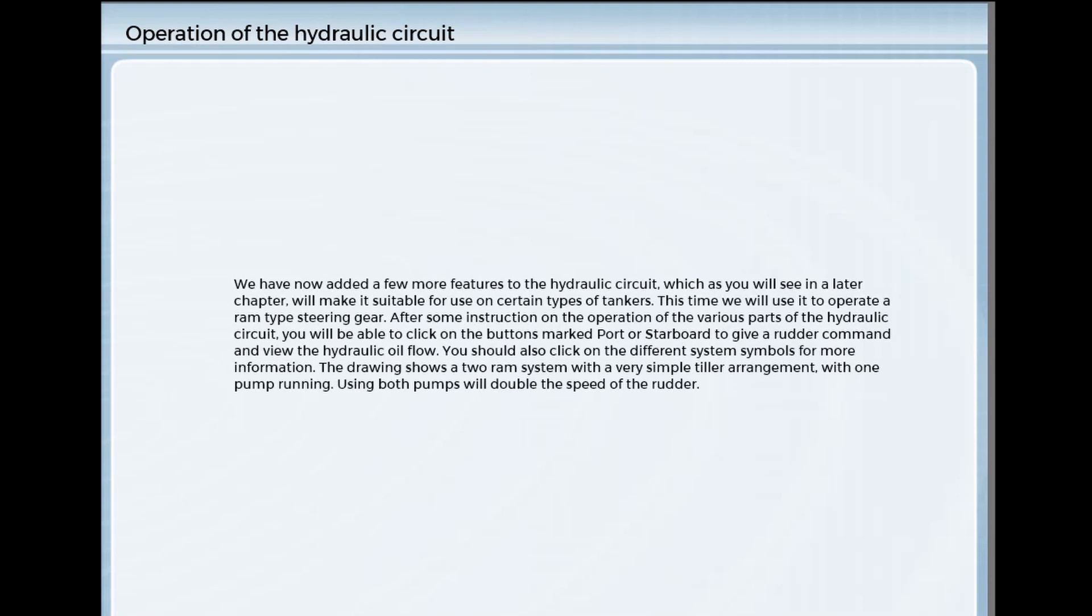We have now added a few more features to the hydraulic circuit, which, as you will see in a later chapter, will make it suitable for use on certain types of tankers. This time we will use it to operate a ram-type steering gear. After some instruction on the operation of the various parts of the hydraulic circuit, you will be able to click on the buttons marked port or starboard to give a rudder command and view the hydraulic oil flow.